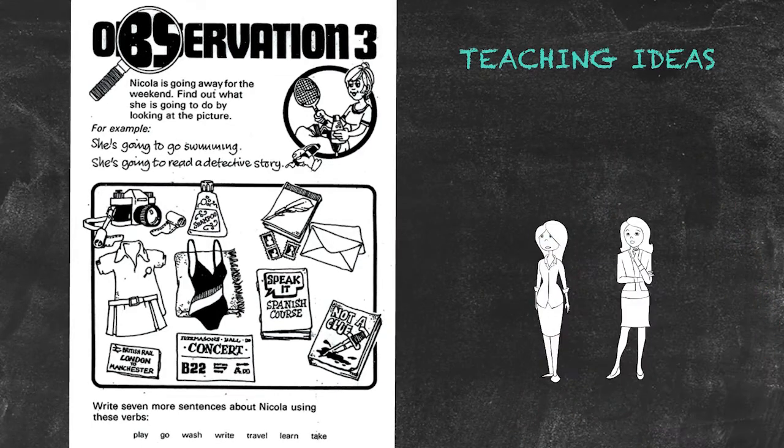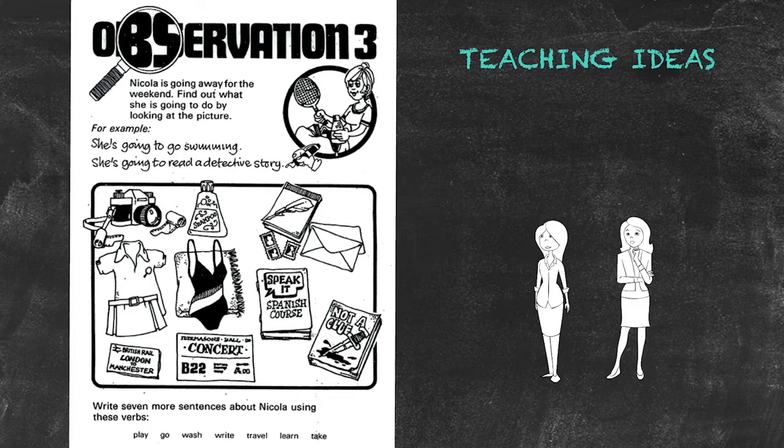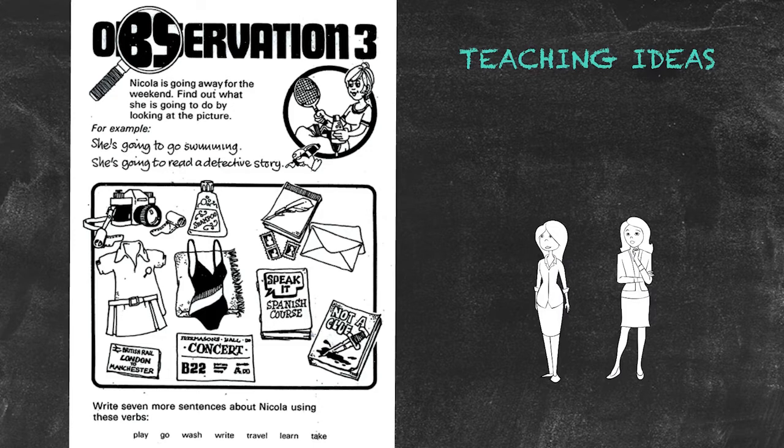Students will work in pairs or small groups to look at evidence based upon the pictures and then make a prediction as to what the person is going to do. As we have low-level learners, we might give them a few prompts based upon which they can make a sentence.